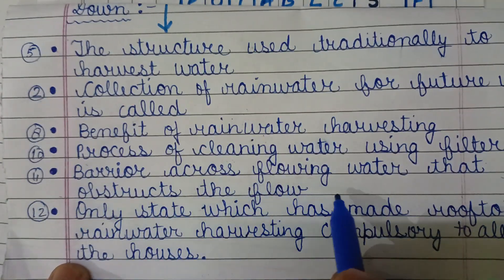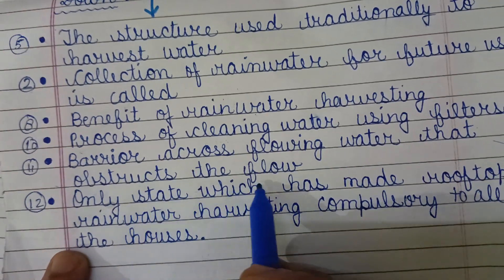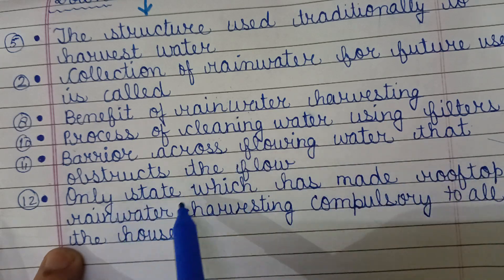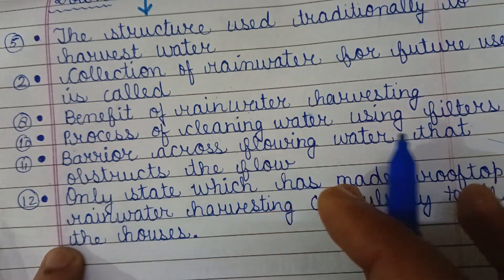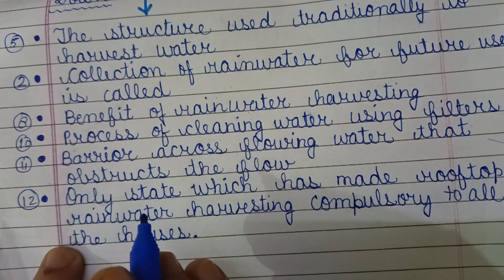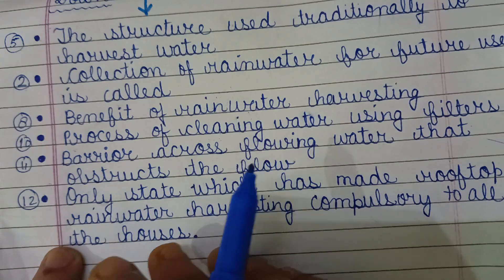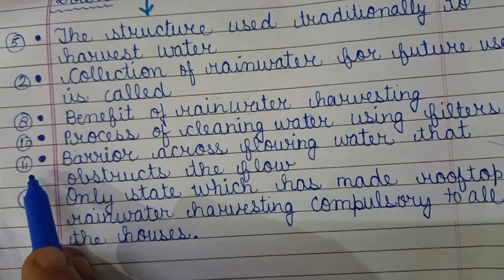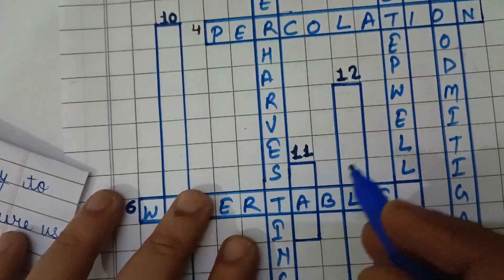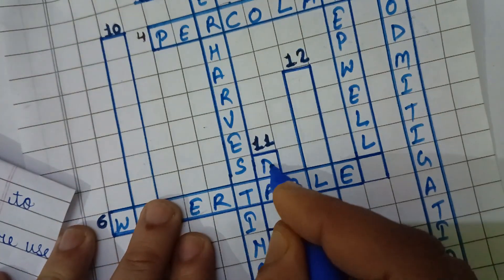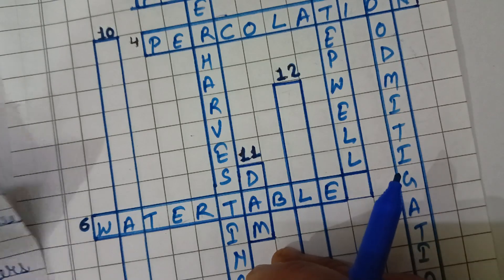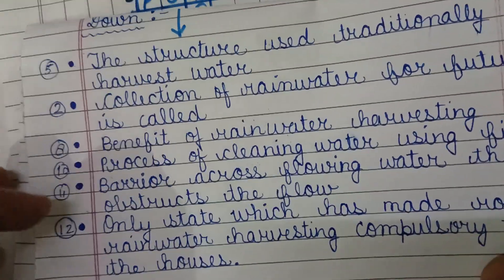A barrier across flowing water that obstructs the flow — these are check dams or embankments to slow the flow of water. This is filled in 11 downward — D-A-M — dams are built to obstruct the flow of water.